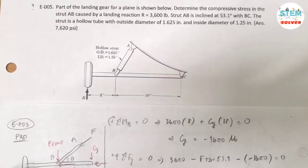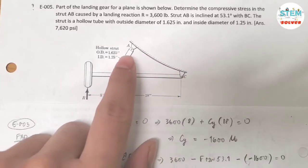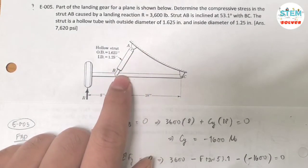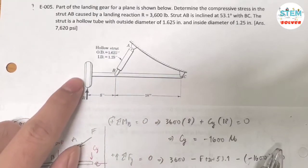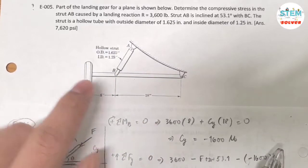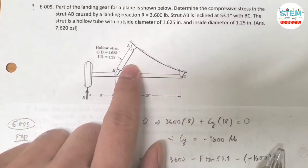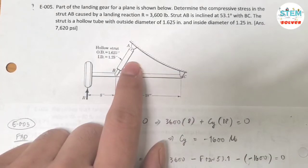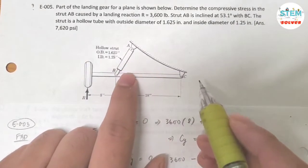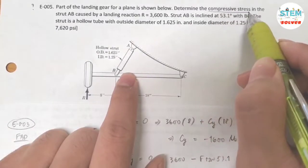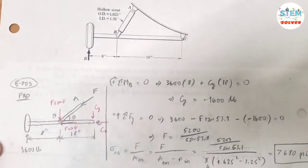So you are given this diagram and this is the strut AB. This is the wheel of the plane. You're asked to find the compressive stress in this strut AB. So first of all, let's draw a free body diagram.